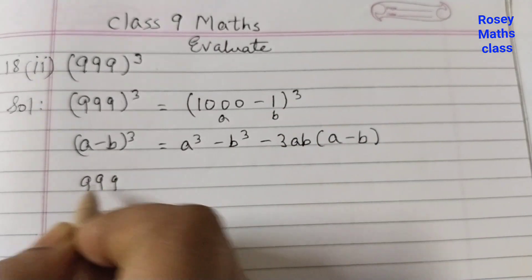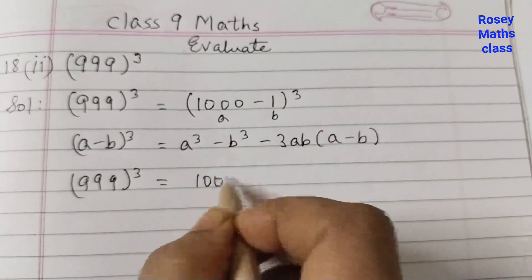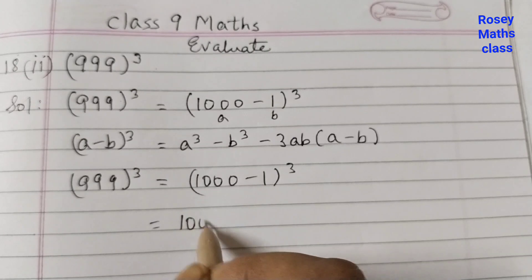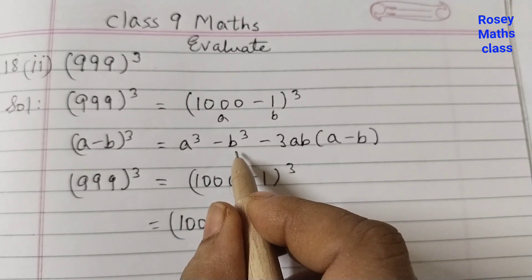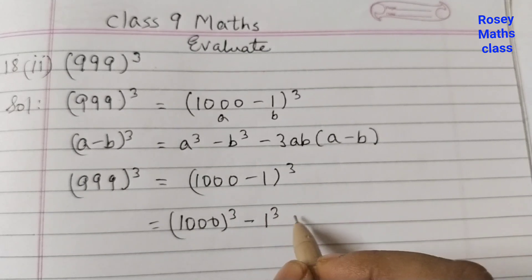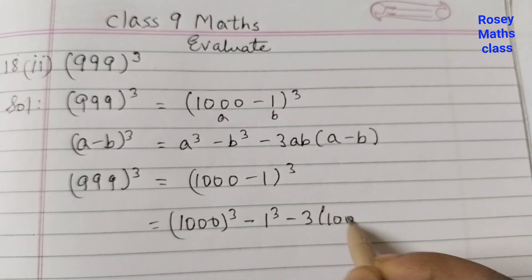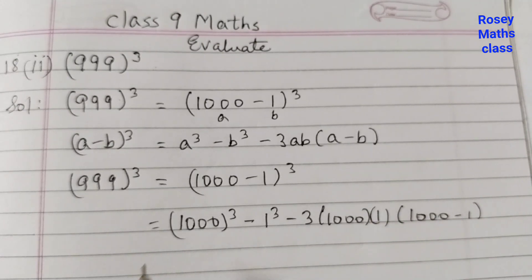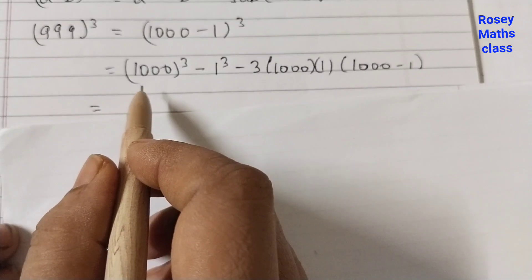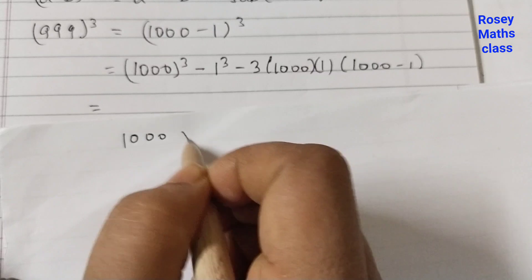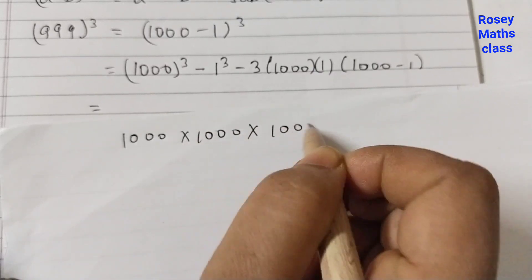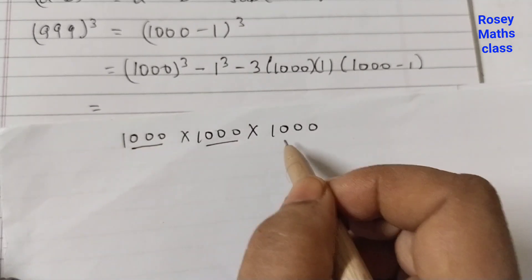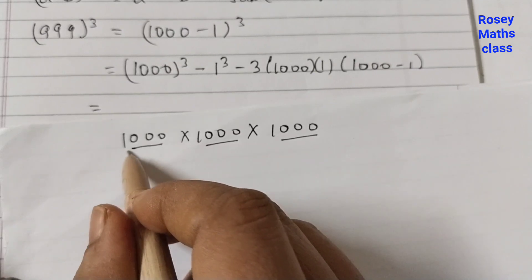So 999 cubed equals a³, that's 1000³, minus b³, that's 1³, minus 3ab(a minus b). Now 1000 cubed is 1000 × 1000 × 1000. It's very easy to multiply — just count the number of zeros: 1, 2, 3, 4, 5, 6, 7, 8, 9 — so that's 1 followed by 9 zeros.